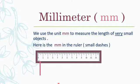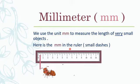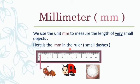Here is the millimeter in the ruler — small dashes. The small dashes between any two big dashes, for example here or here or here, are millimeters. I can use millimeter to measure the length of an ant, a ladybug, a particle of rice, or a seed.